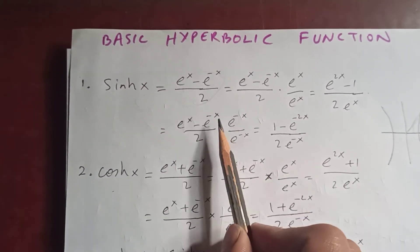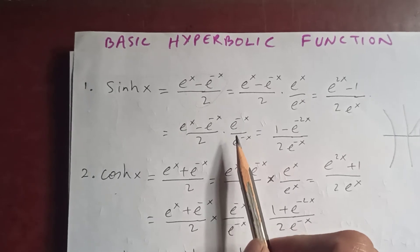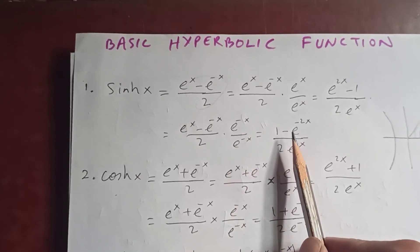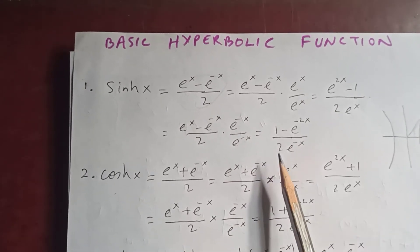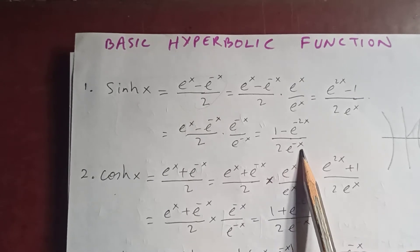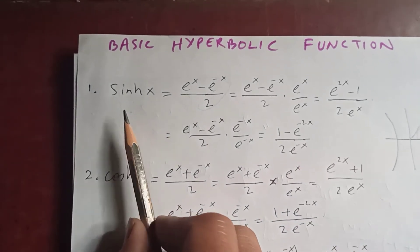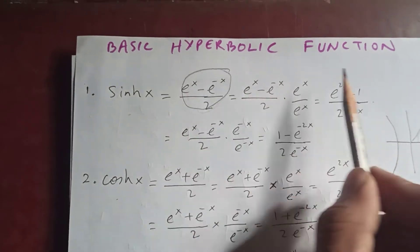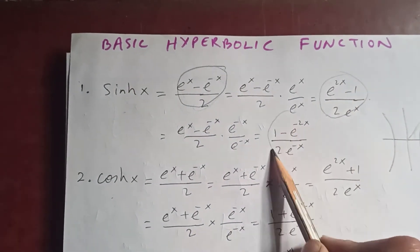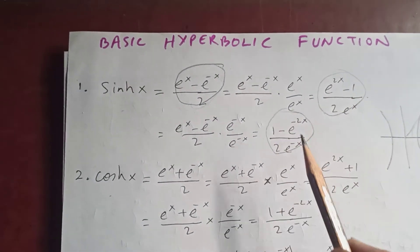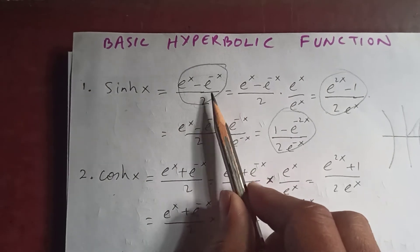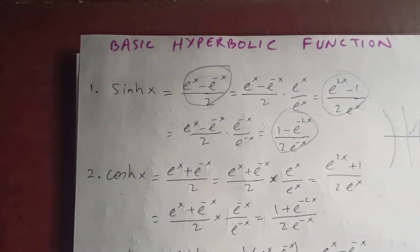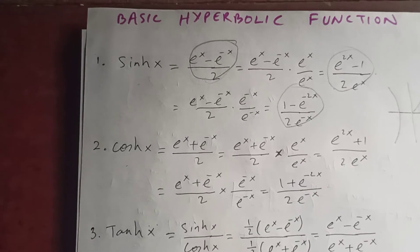If you multiply by e to the negative x on both sides, you can get 1 minus e to the negative 2x, upon 2e to the negative x. So sinh(x) can be expressed in these three equivalent forms.